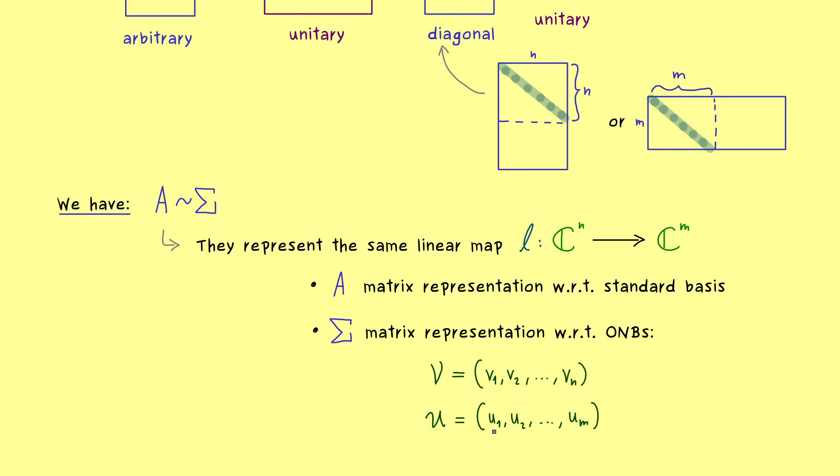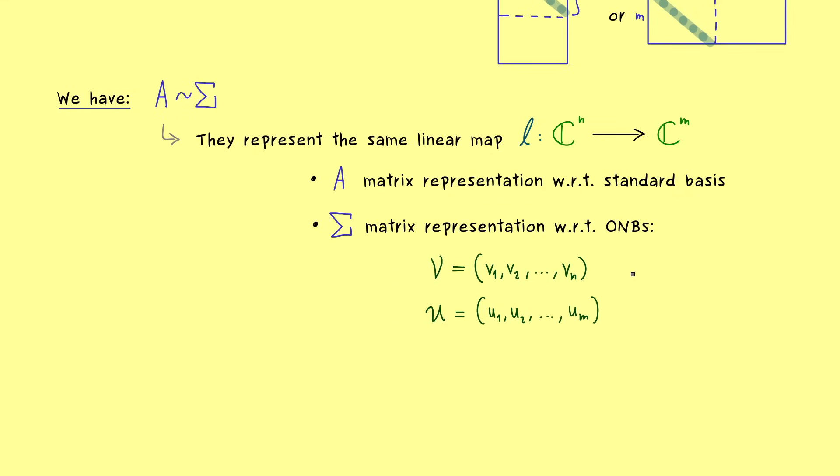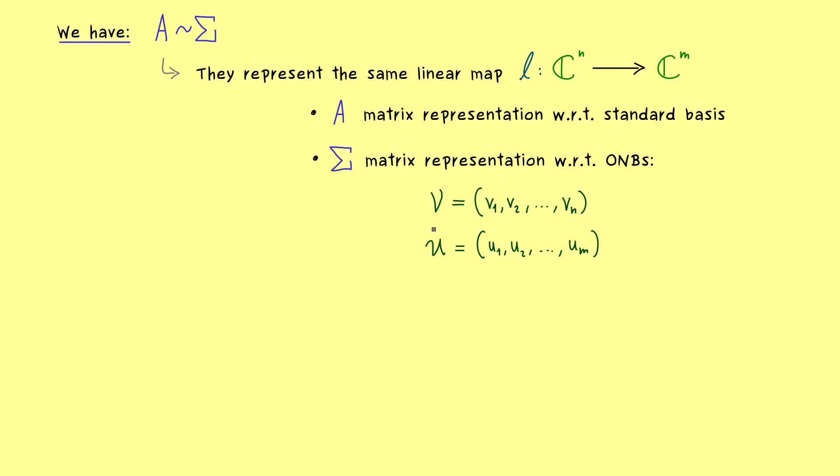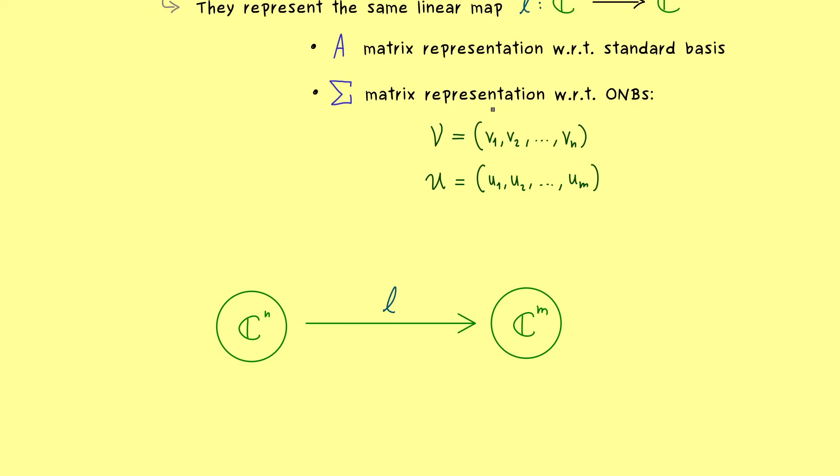And on the other hand we also have curved U as an ONB in C^m. OK, with this knowledge I can give you the whole picture of this change of basis. So maybe first in the middle we have our abstract linear map L. We will not do much with this one, but we will represent it with two different matrices. So the first thing we can do is to use our standard basis in C^n and in C^m. Then nothing really changes,